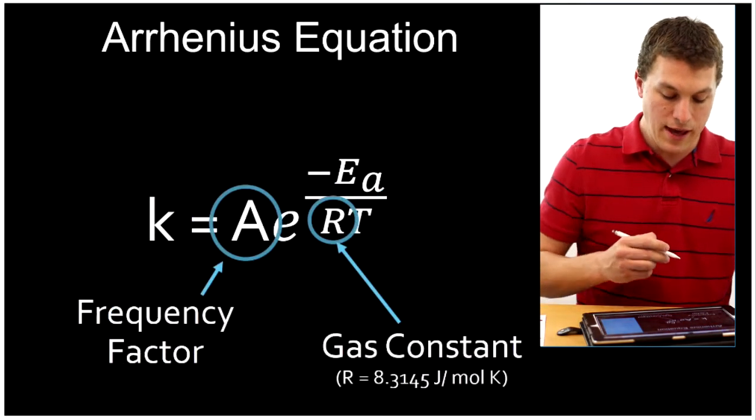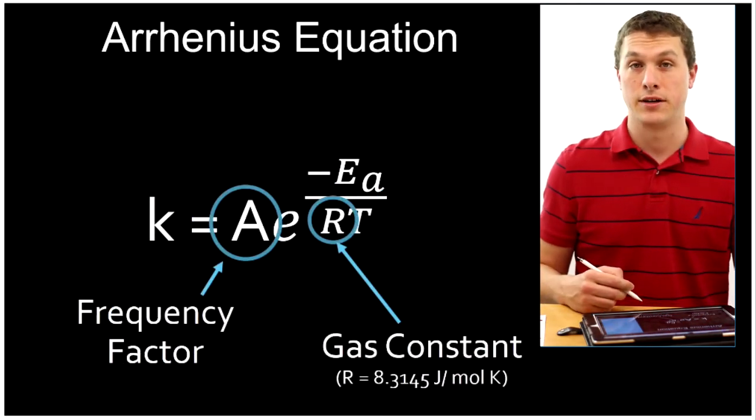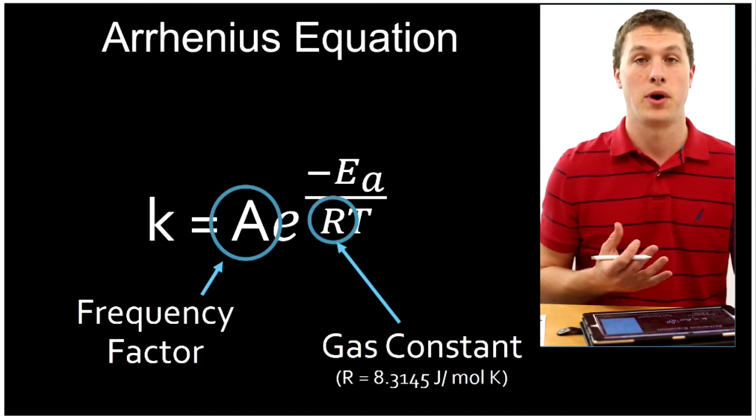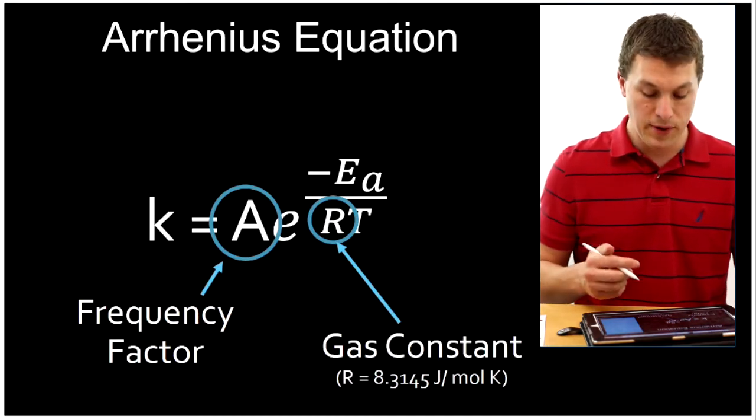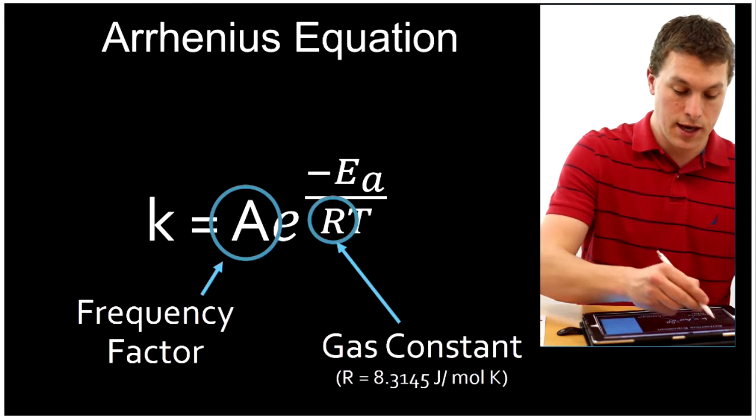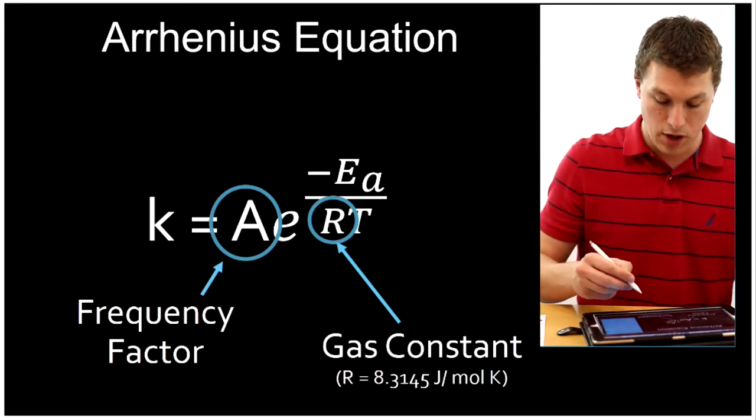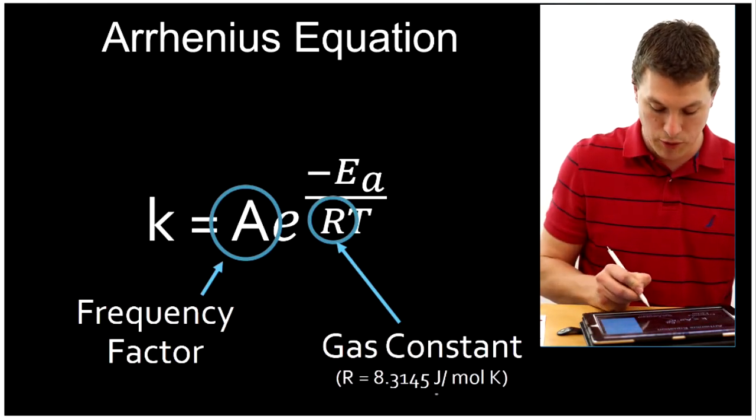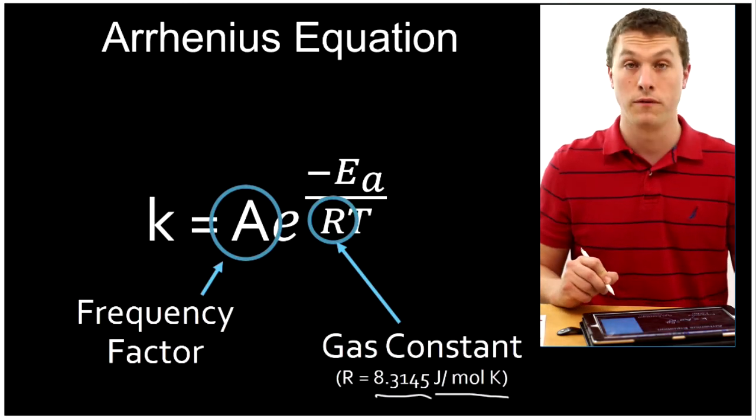We also have A, which is called the frequency factor. What this is, is basically a measure of how often the reaction tries to go forward. And then we have R, which is the gas constant. And really important here, when you use this R, you have the units of joules per mole Kelvin. So it's going to be 8.3145.